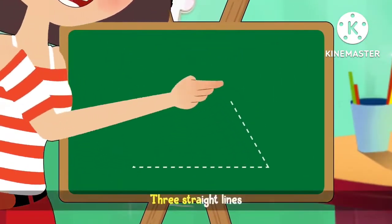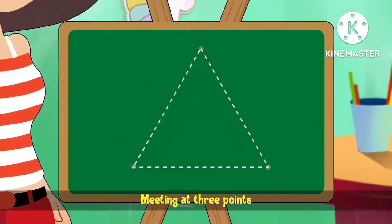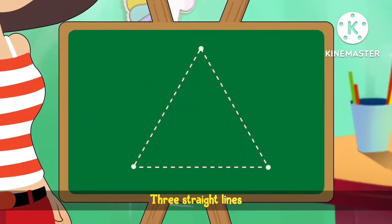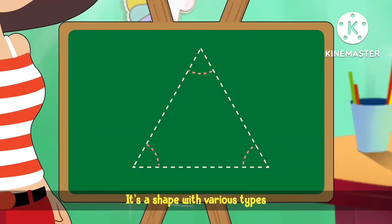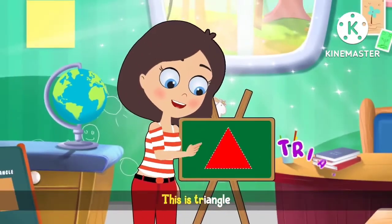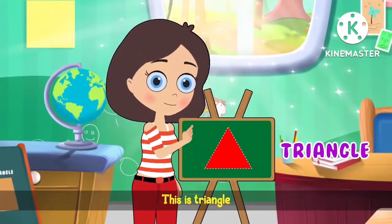Three straight lines meeting at three points. It's a shape with various types. This is triangle, this is triangle, triangle, triangle.